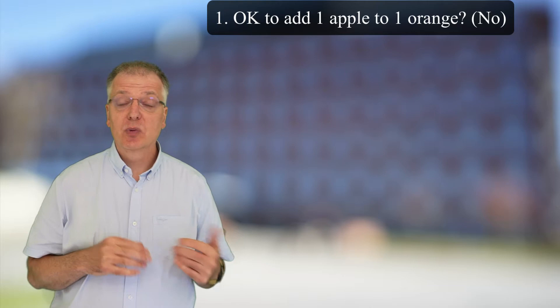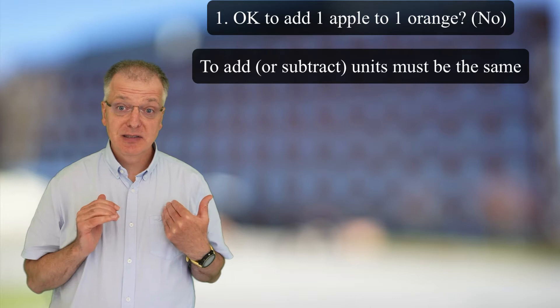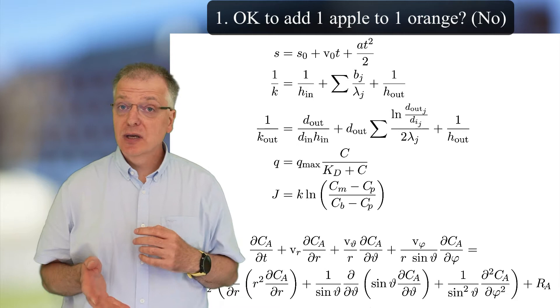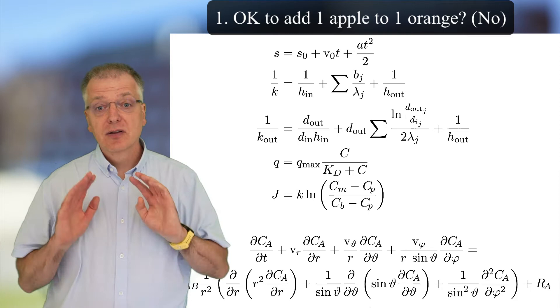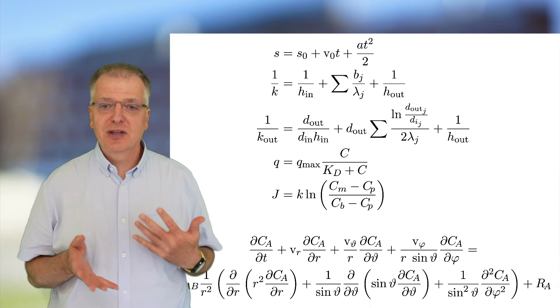So, question 1. Why can't you add one apple to one orange? Because to be allowed to add two numbers, these numbers must have the same unit. Here are some equations where things are added together or subtracted from each other. In all these equations, the units must match exactly.